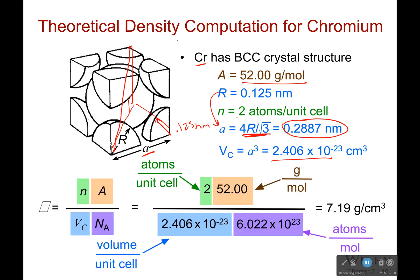Now, if we plug in everything we know, the volume of the unit cell, the atom per mole, its molecular weight, the number of atoms per unit cell, we get that the density is going to be 7.19 grams per centimeter cubed. 7.19 grams per centimeter cubed.